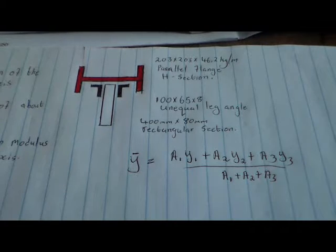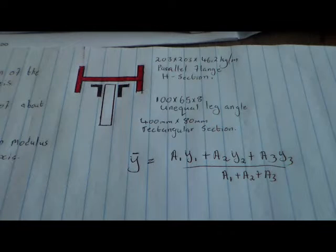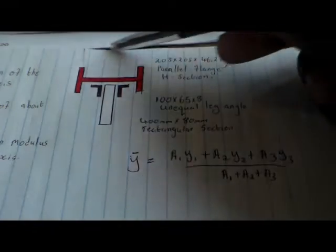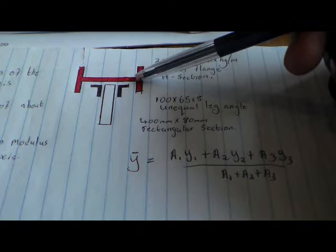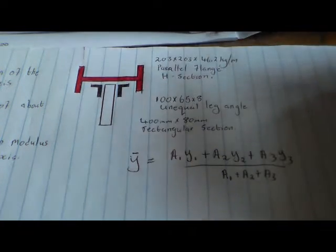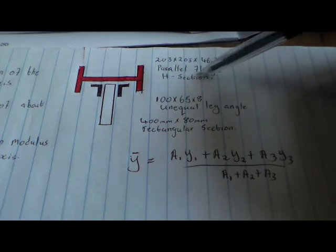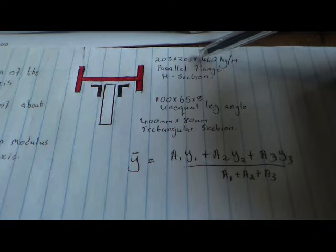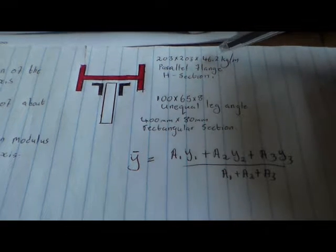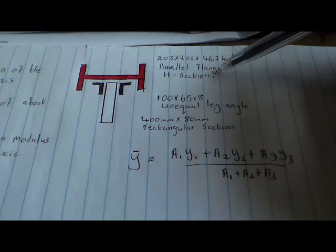Ladies and gentlemen, today we'll be looking at the strength of material N5 and N6. This is the simple bending of beams. In this case, we'll be concentrating firstly on the edge section. This is a build-up beam. We have an edge section here, an angle plate, and also a rectangular bar. This is the parallel flange edge section of 203 times 46.2 kg per meter.